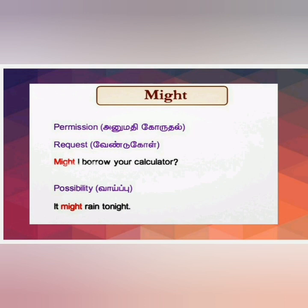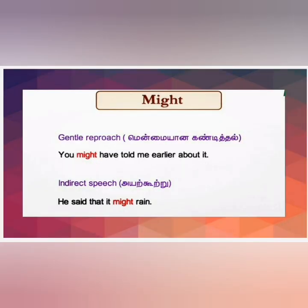Might is also used to express permission, request, and possibility. For permission/request: 'Might I borrow your calculator?' — though this is rare. For possibility: 'It might rain tonight.' Might is used in indirect speech as well — for example, 'He said that it might rain,' where 'may rain' in direct speech becomes 'might rain' in indirect speech.